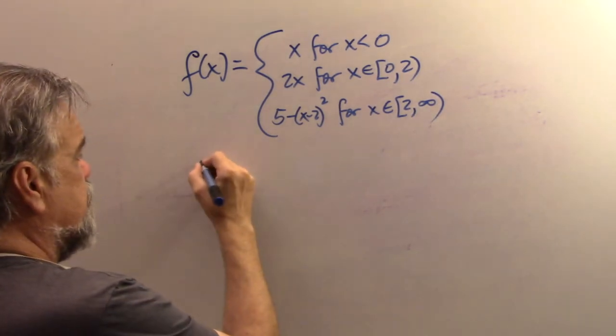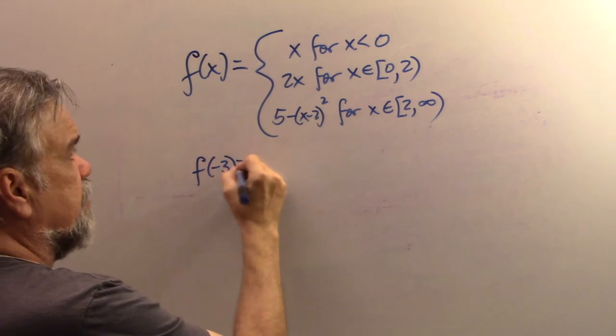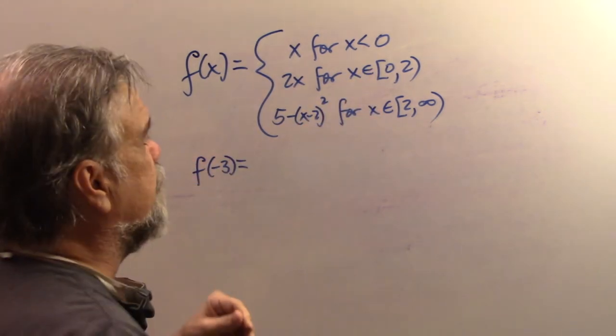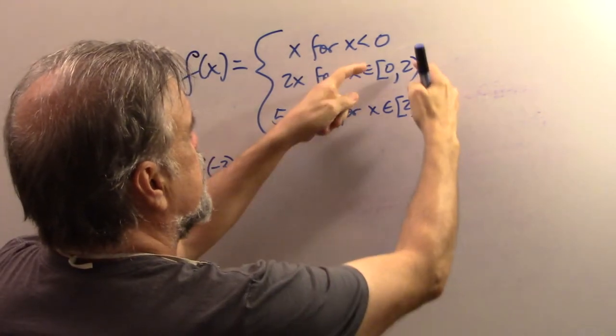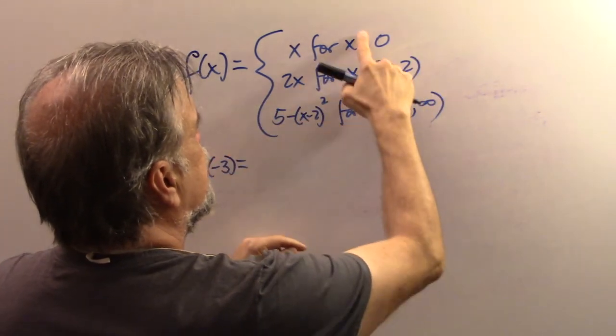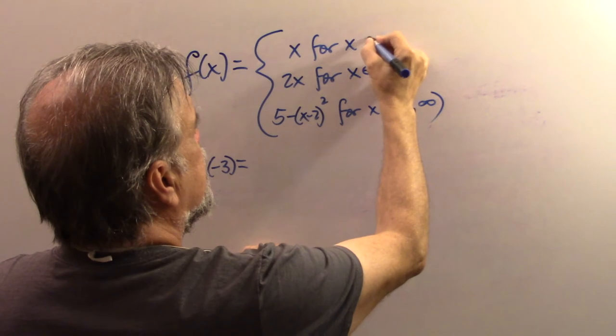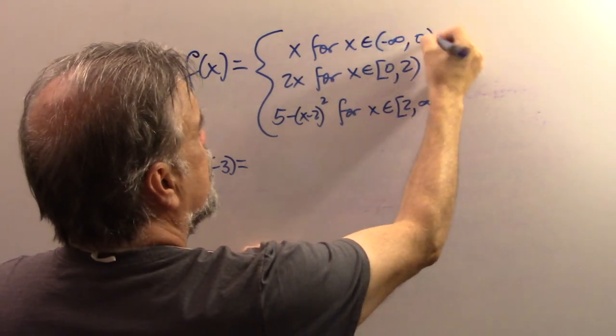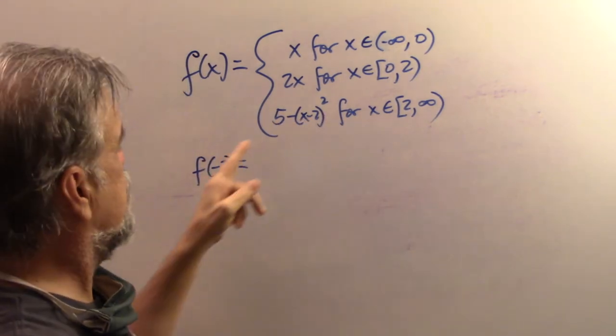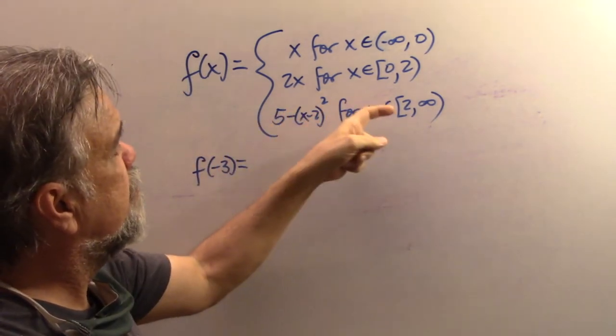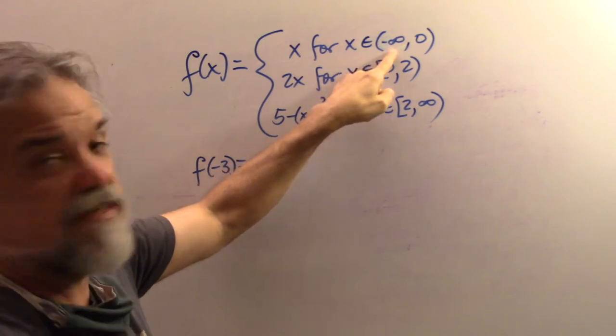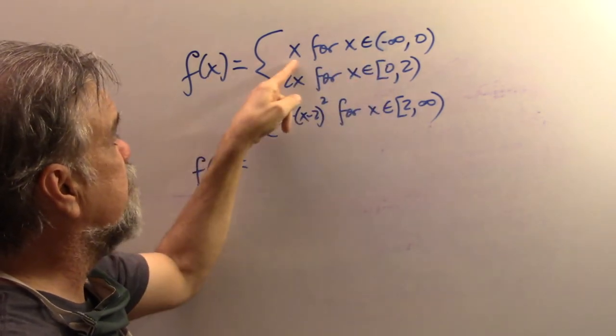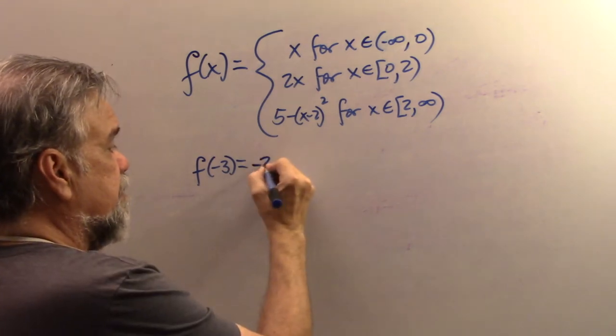So what would F of negative three be? So again, we come over here, you know, I didn't write this very well. If I'm using interval notation here, I should really use interval notation here. So let me say X goes from negative infinity to zero like that. That's more consistent. So I would look at this negative three and I'd say, where does it fall? It falls into this category right here, into that interval. So that means F of X will equal X. So this will equal negative three.